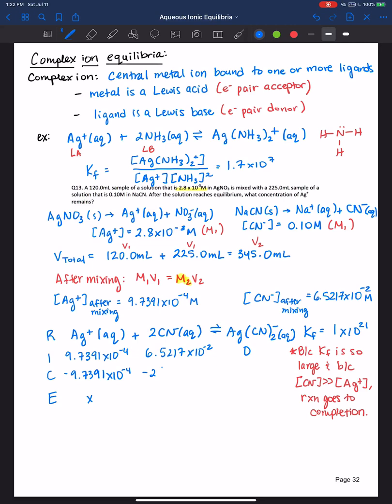This one is minus 2 times 9.7391 times 10 to the negative 4th and so we have 6.3269 times 10 to the negative 2nd and this one is plus x so plus 9.7391 times 10 to the 4th. Okay, so once again because our KF value is so large and because we started with way more cyanide than we did the silver cation, this reaction essentially goes to completion based on our limiting reactant the silver cation.